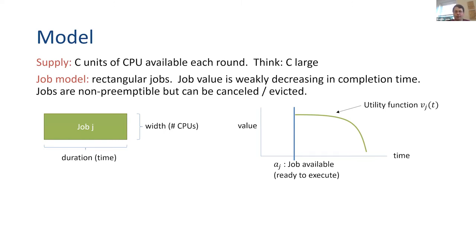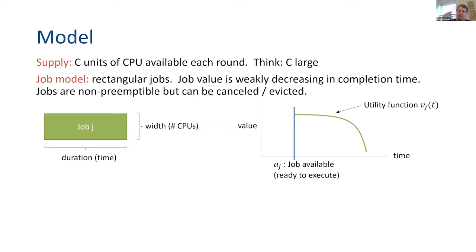Let me jump right into the model. I want to imagine that I have a large supply of CPU units every time — large compared to what any single job wants, a large market assumption. My model for jobs is going to be rectangular: every job requires a certain number of CPUs for a certain amount of time. If I give those CPUs for that contiguous block of time, the job completes. The job becomes available to execute at some particular time, and once it's available I can choose when exactly to start running it. There's a utility function that decays the longer it takes to complete.